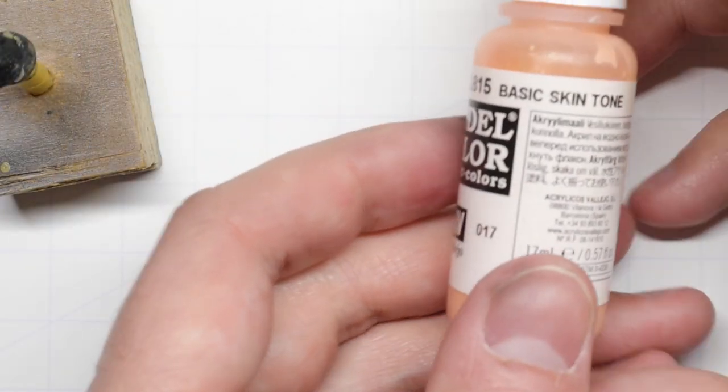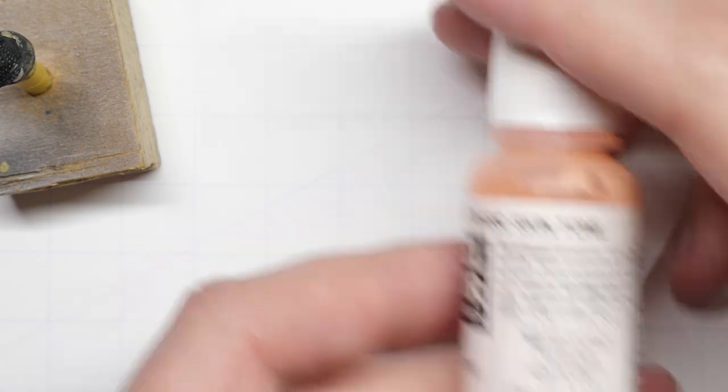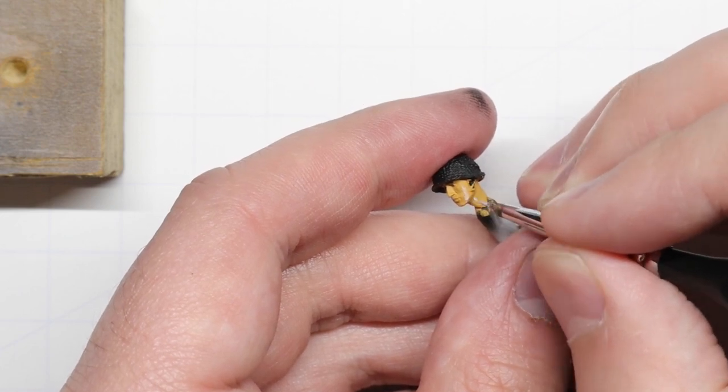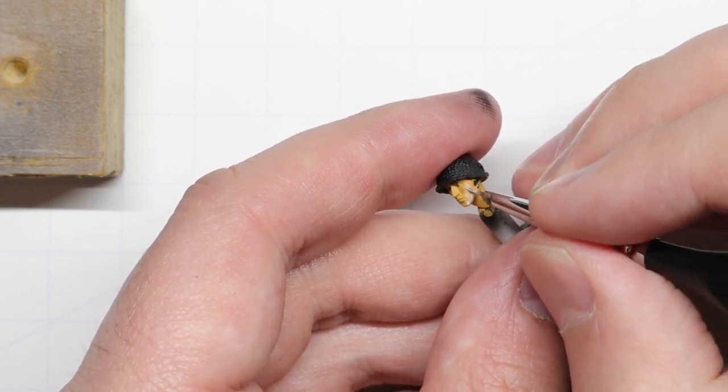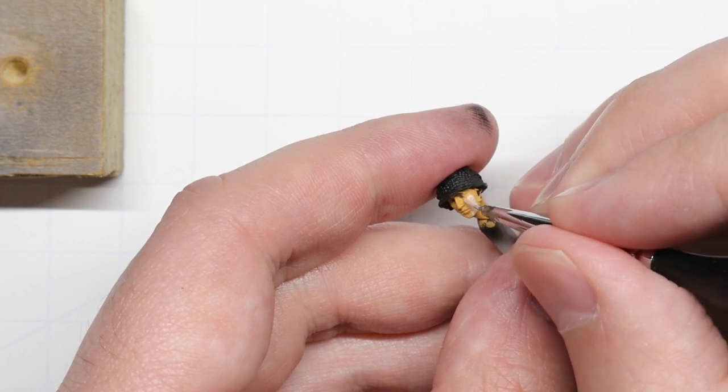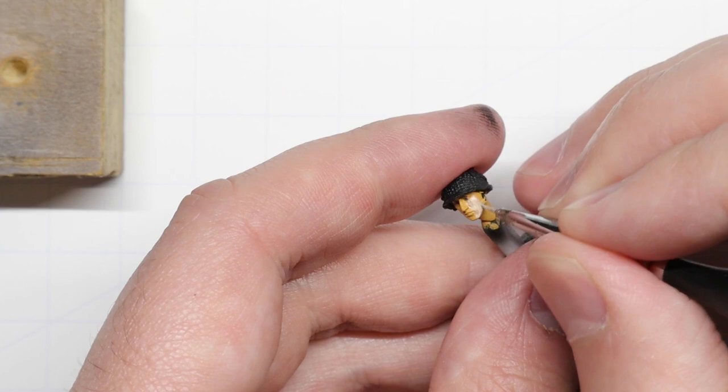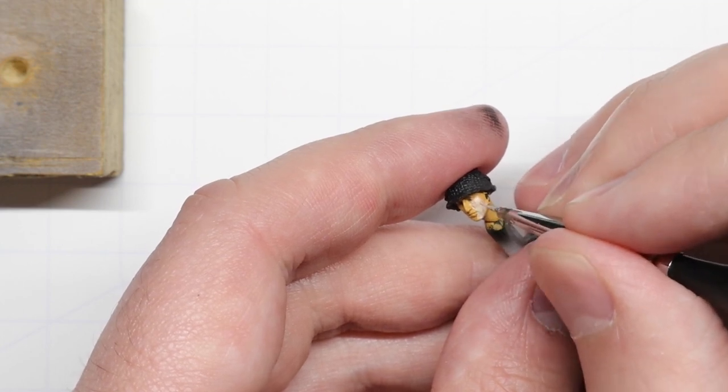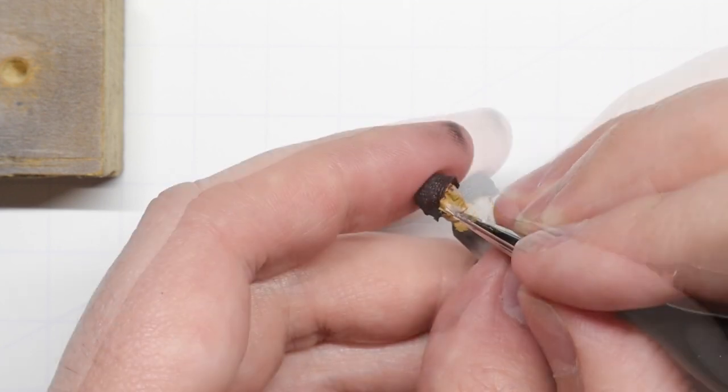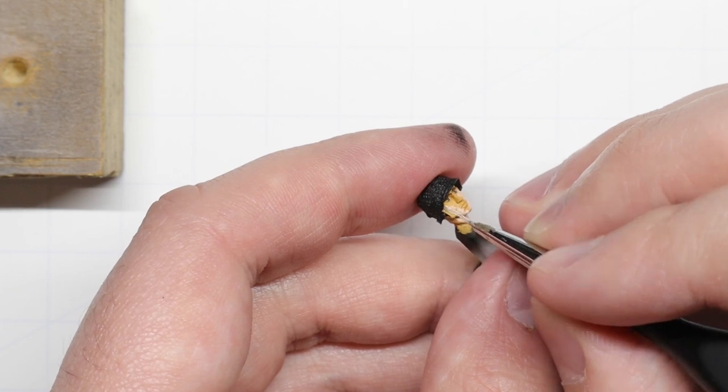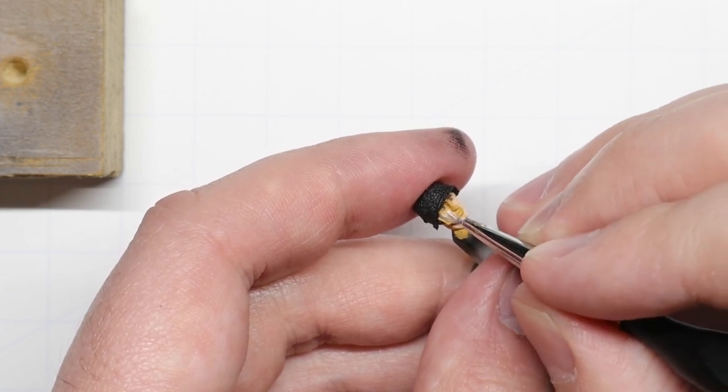Next we're going to do a glaze of basic skin tone. This is going to look pretty wacky at first, but stick with me, trust the process, it's all going to work out in the end. We want to thin our paint down a little bit here with some water, and we're going to go over that medium flesh we just painted with our new lighter color. This is going to help make the skin a little less yellow and still let some of that color through for a nice dynamic skin tone and feel.